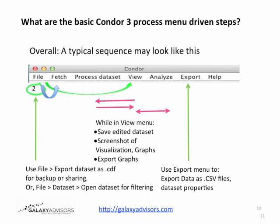You might calculate annotation statistics such as betweenness, closeness, or degree, then go back to view how those nodes look resized in the graph. You might return to Process Dataset to remove certain nodes, or go to Analyze to collapse an individual graph to its domain — looking at .org, .edu, .net interactions. You can go back to the View menu to save and edit the dataset, take screenshots of the visualization, or export graphs. You can also use the Export menu to export data as actor or link CSV files, or export dataset properties.